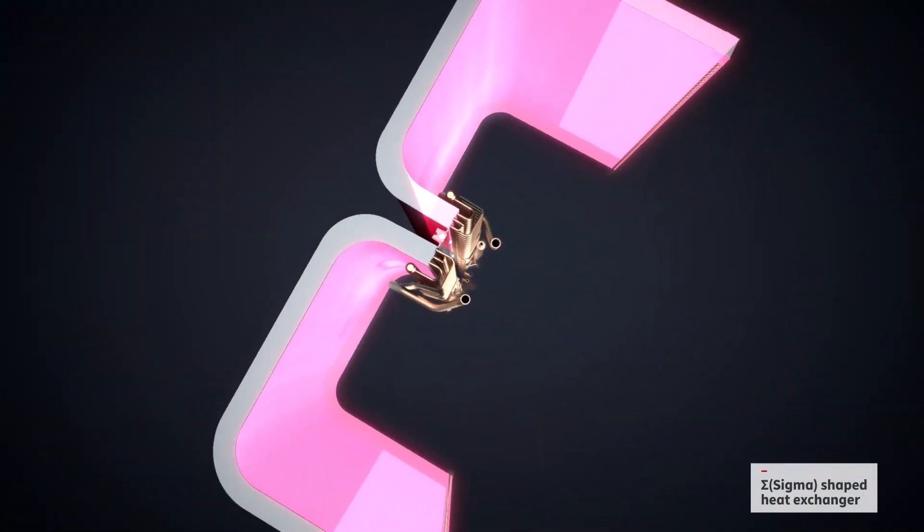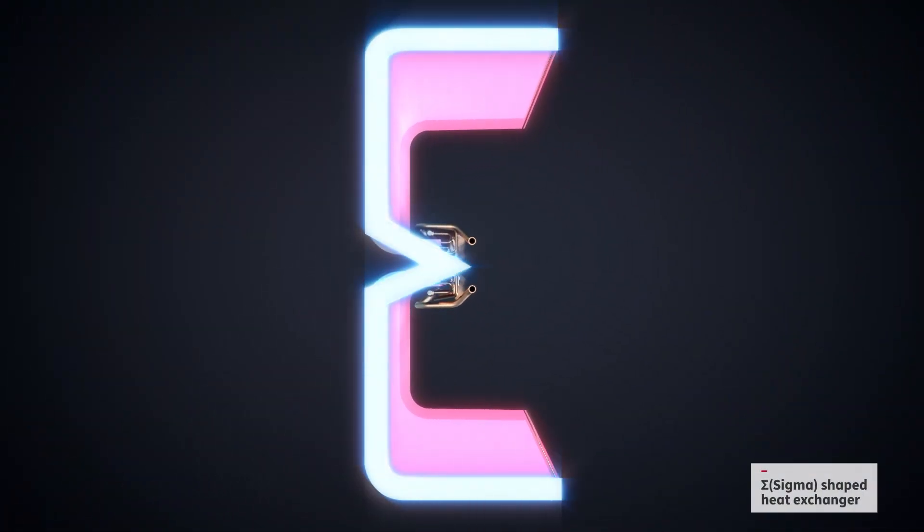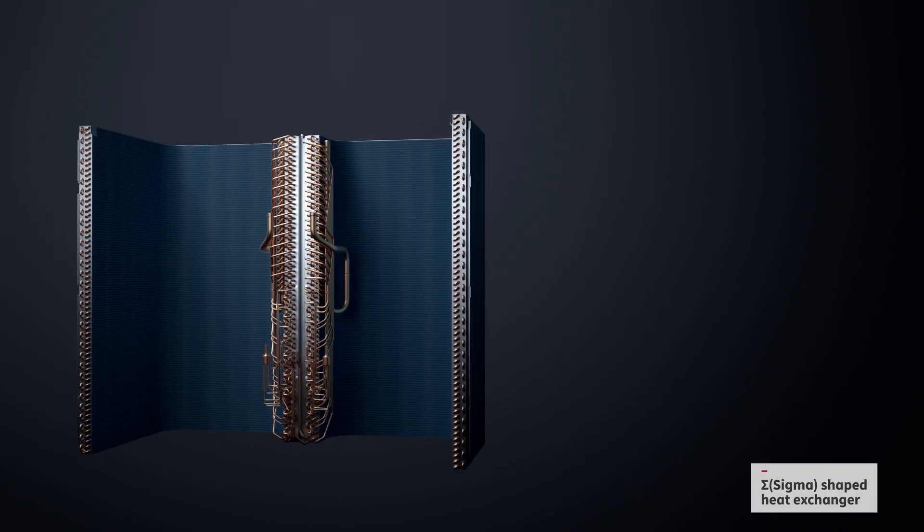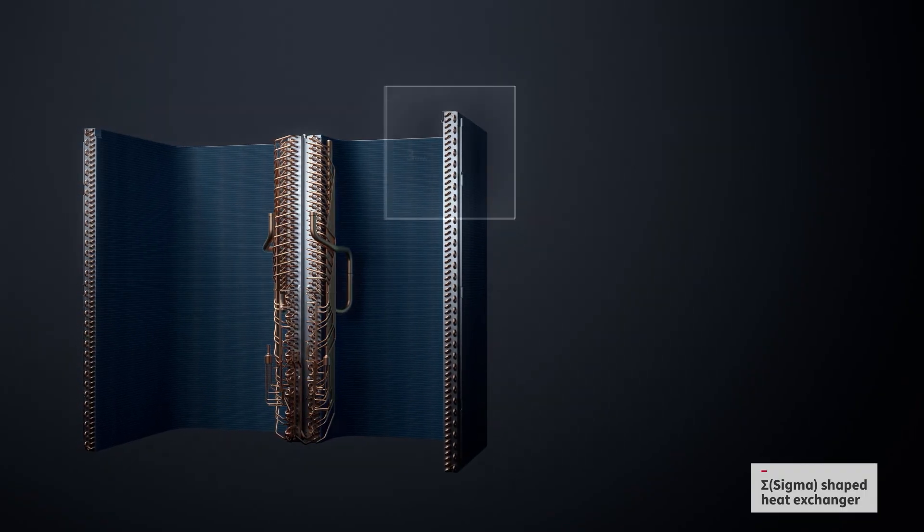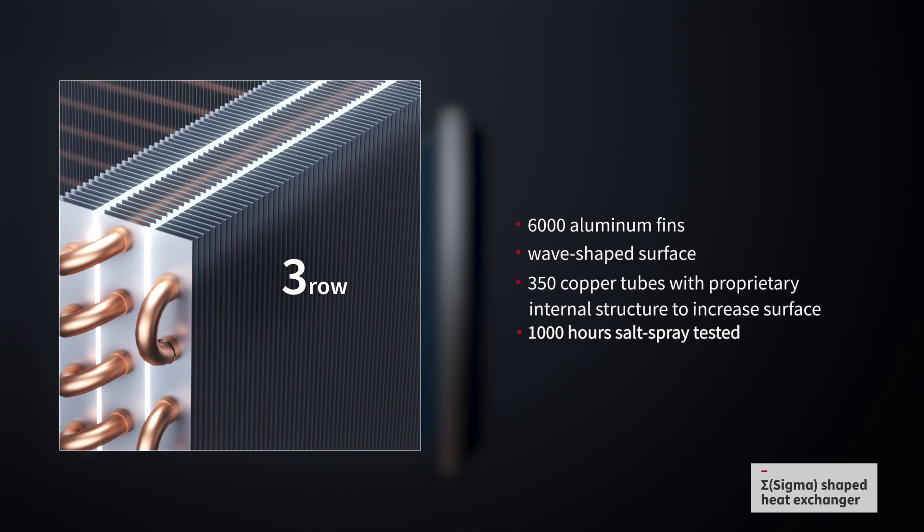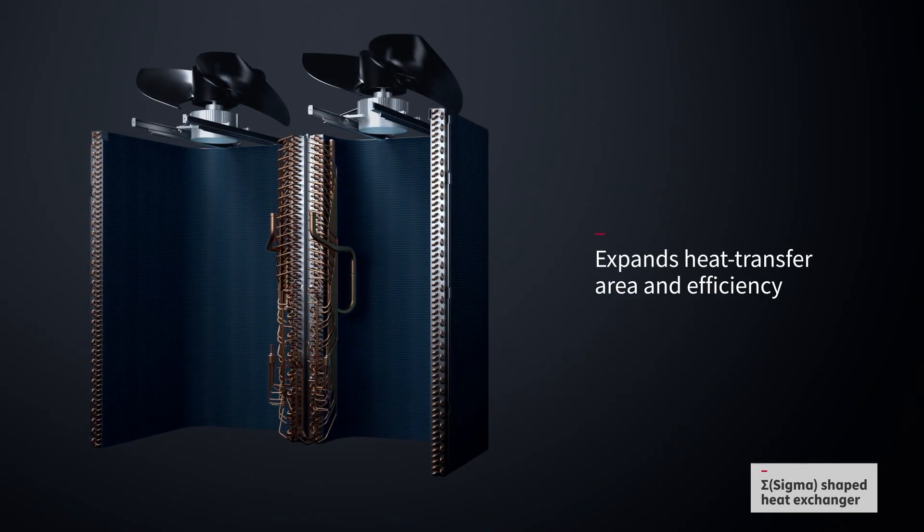Finally, the refrigerant goes into the heat exchanger, which has a unique sigma shape. It increases the heat exchange area with specially designed aluminum fins and copper tubes to maximize the heat exchange performance, contributing significantly to the efficiency of the system.